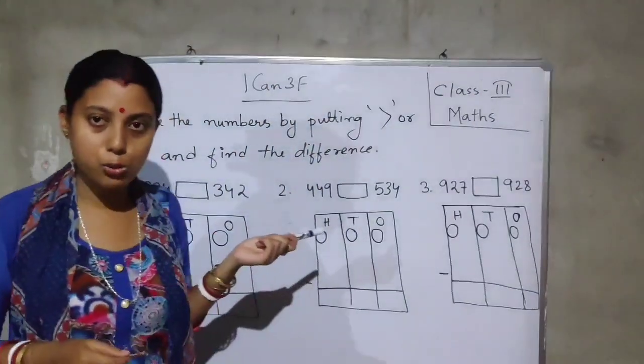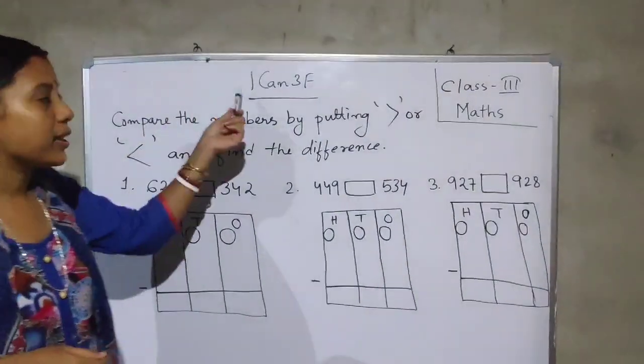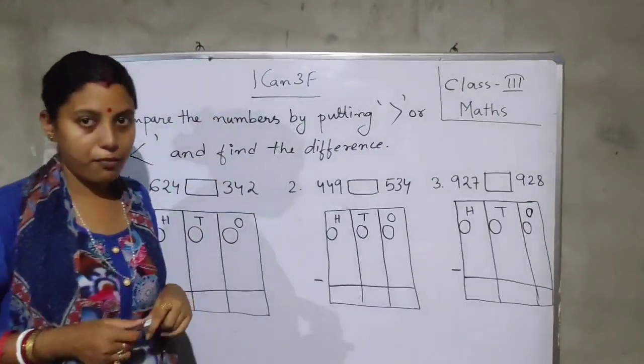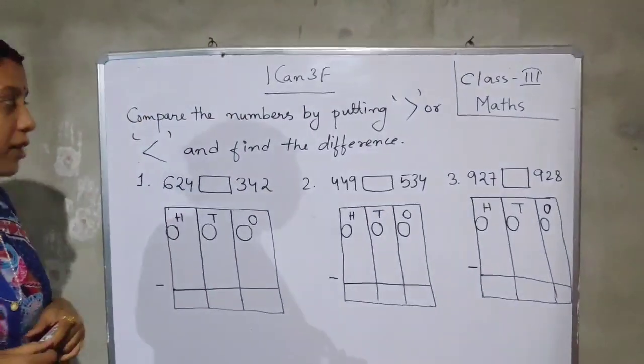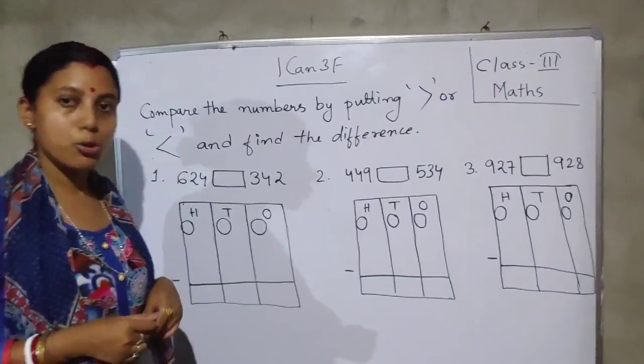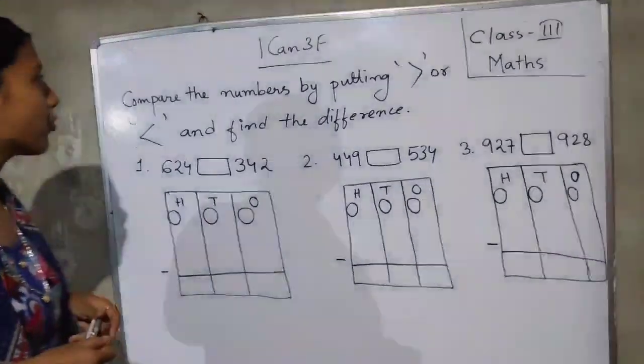What will we do in our math class today? We will do exercise 1 can 3f. As we have finished up to 1 can 3e, today we will be doing 1 can 3f.